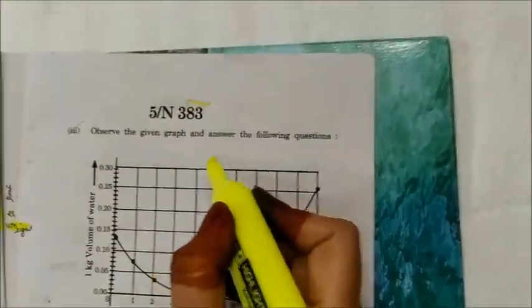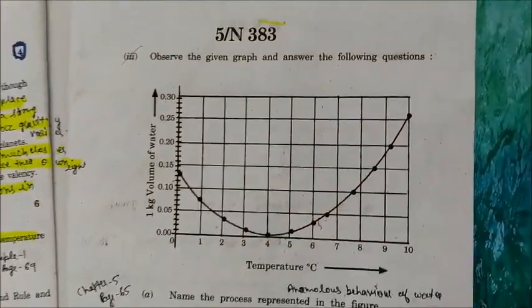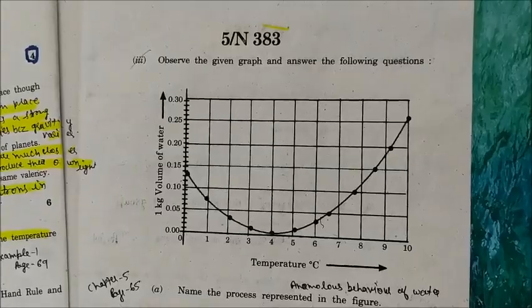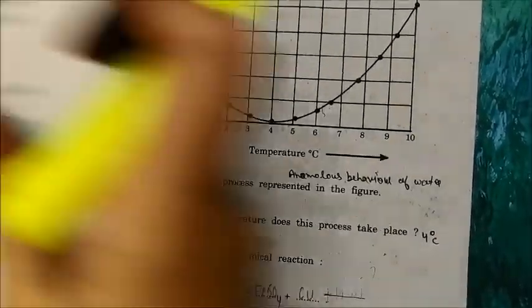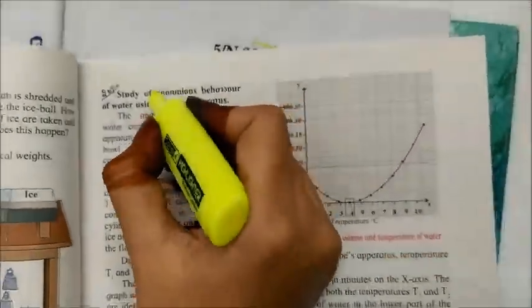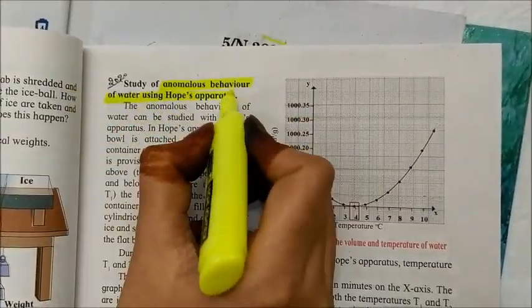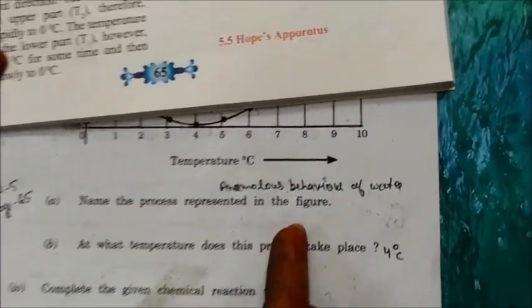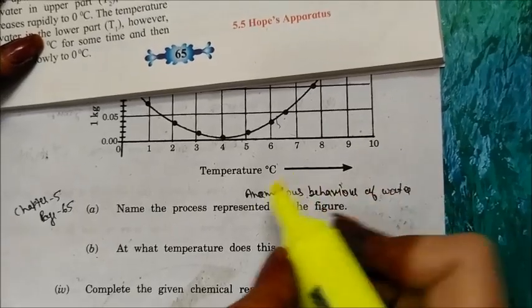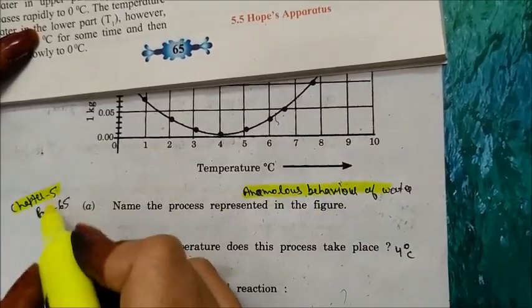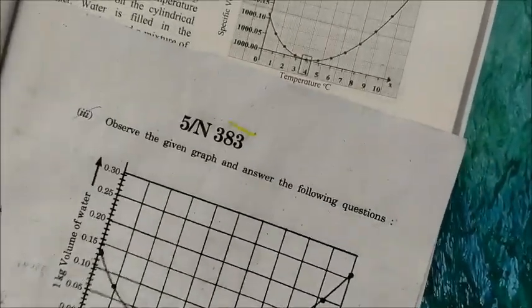Observe the given graph and answer the following questions. It has been taken from your textbook page number 65, chapter 5. The process represented in the figure is the anomalous behavior of water. This is from chapter 5, page number 65.